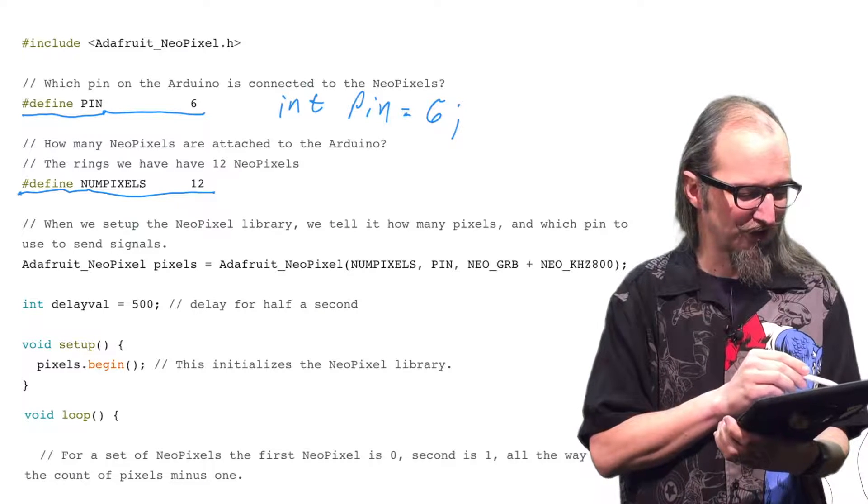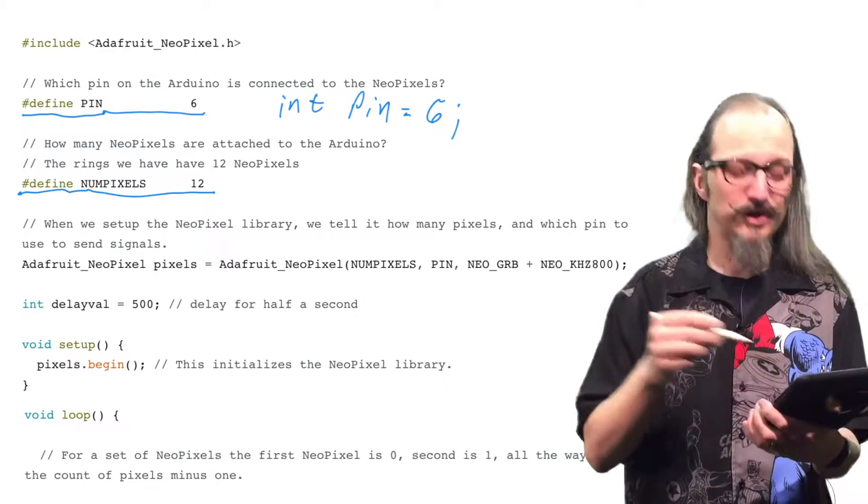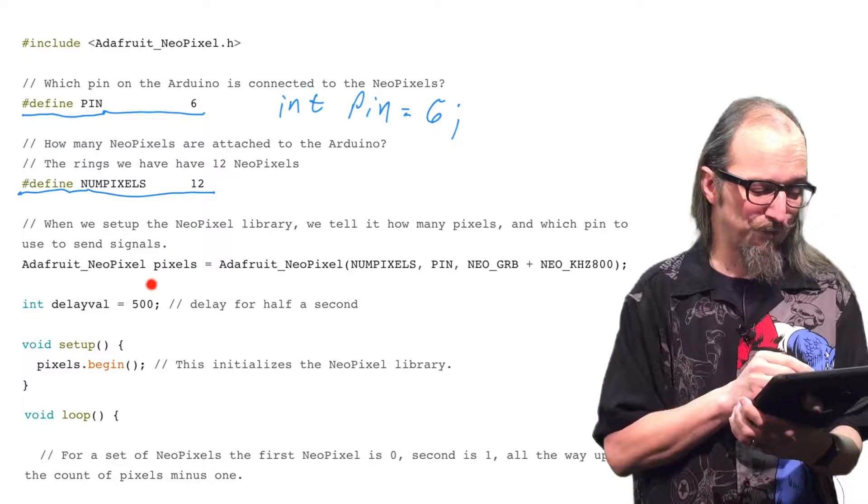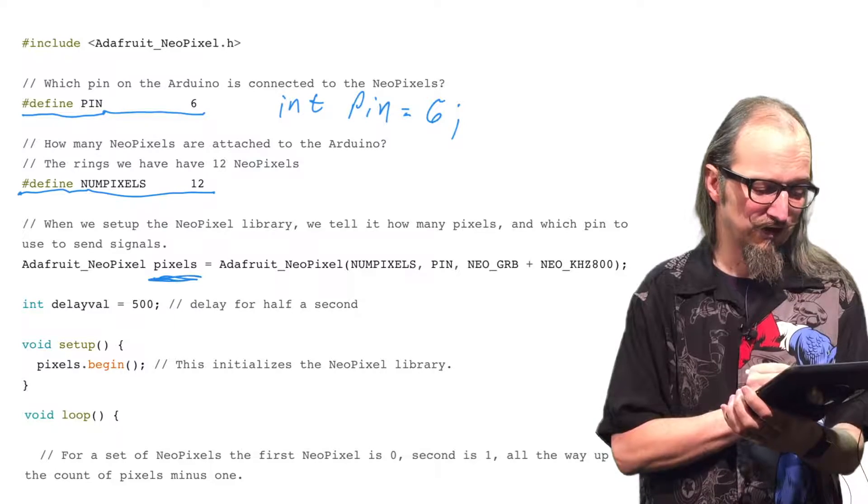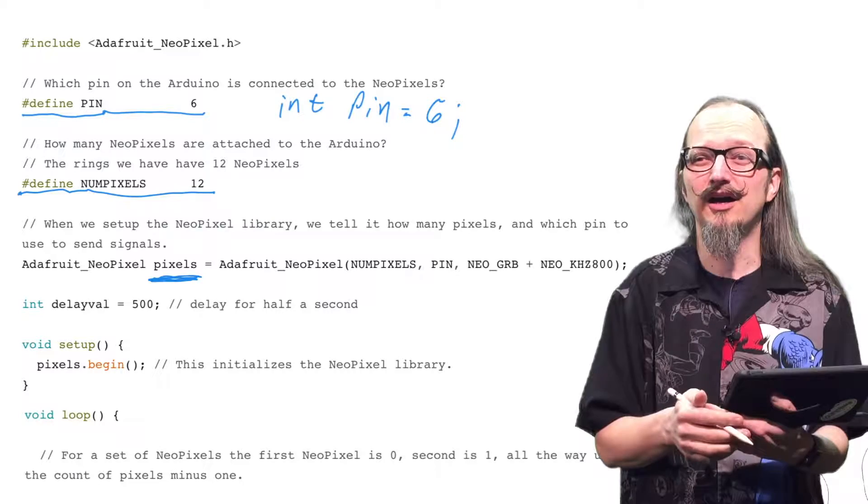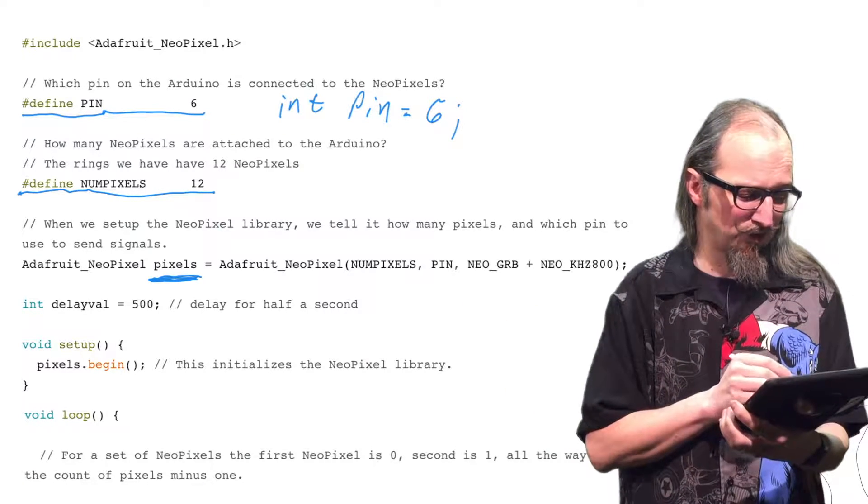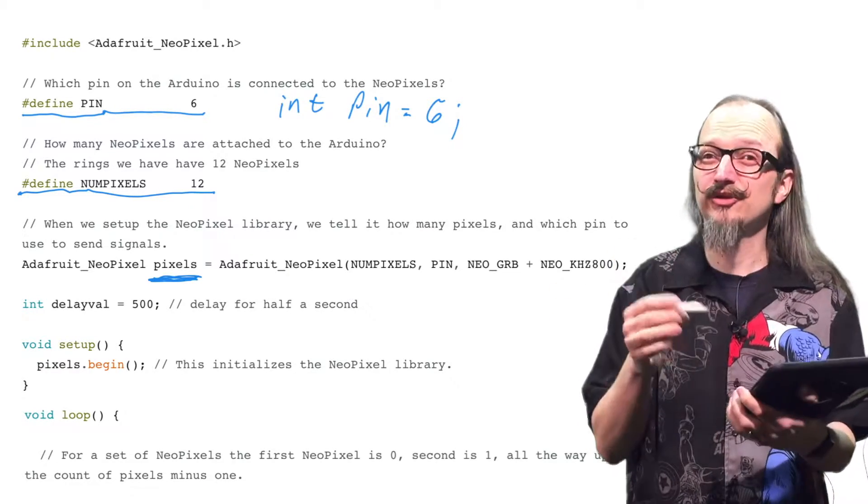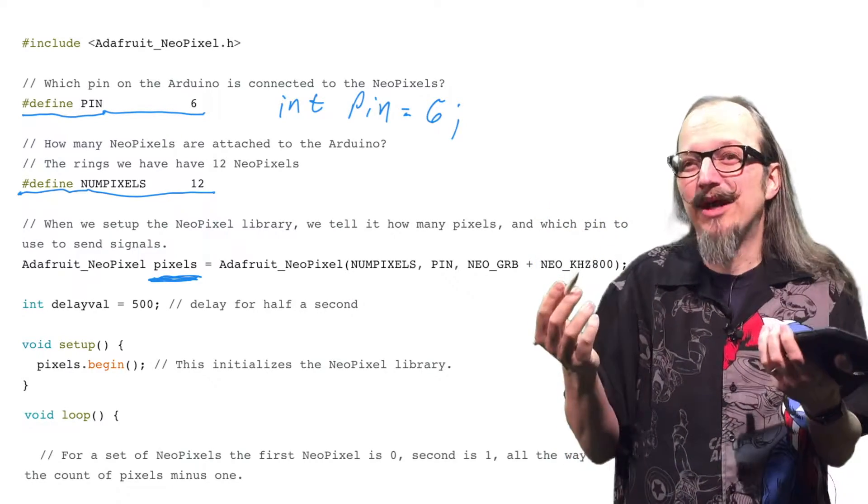Now, the next thing we need to draw your attention to is here. This is where we are invoking an instance of the Adafruit library. So we're going to create an instance called pixels. Now, this could literally be, this pixels, could literally be any word. We're just calling it pixels here. Now, if you change it, let's say you wanted to call it pixels ring, you could do that. But anywhere else where pixels appears in the program, you would have to change it to pixels ring. So it's called pixels because that's the name we gave it. Just like any variable, we could give it a name and it can be any name we want.